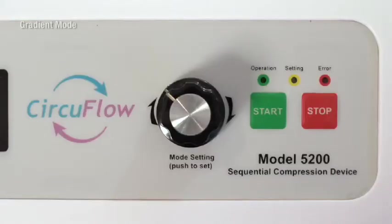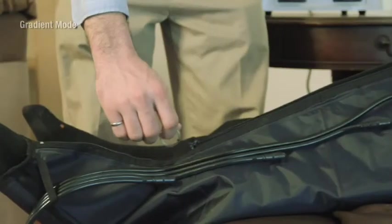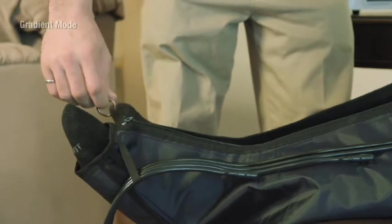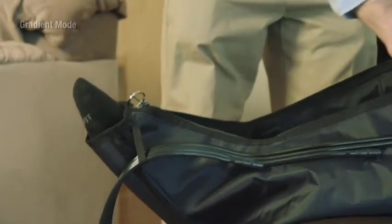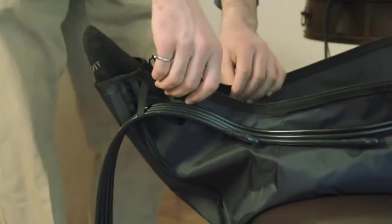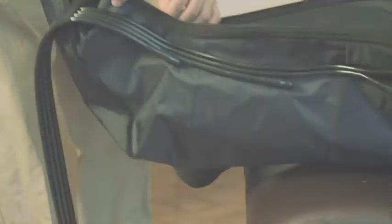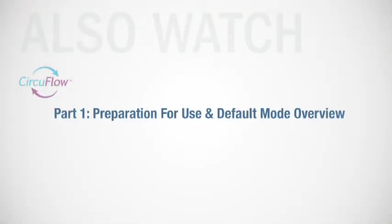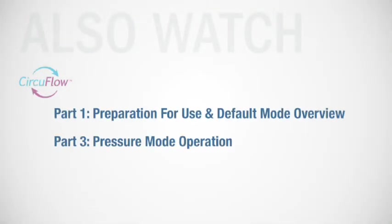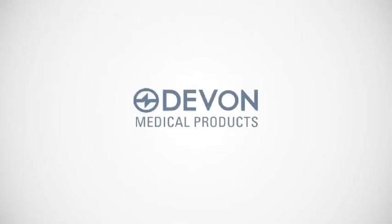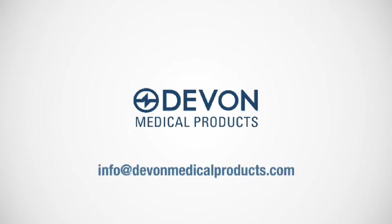Once the power indicator light is off, it is safe to remove the sleeve. Thank you for watching. We encourage you to watch the other two videos in this instructional series, which detail different pressure settings that can be used for the CircuFlow 5200 device. For more information or with specific questions, please email info at devinmedicalproducts.com.